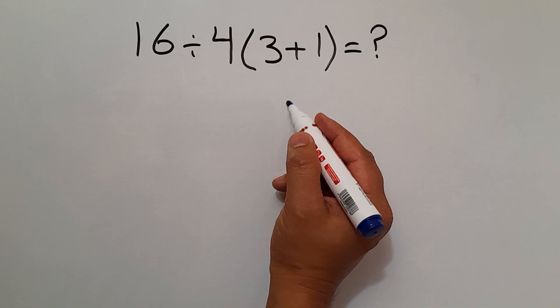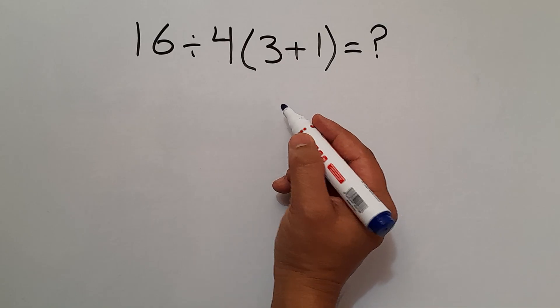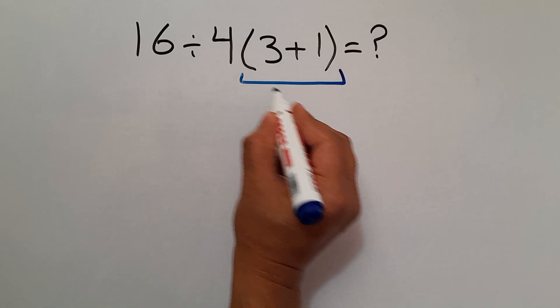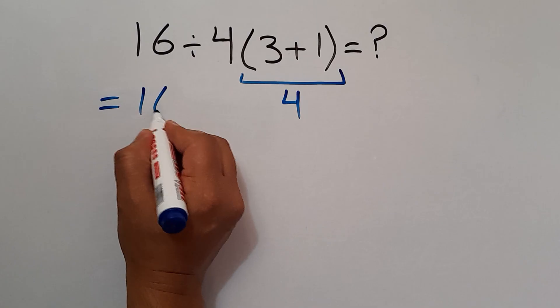3 plus 1 gives us 4, so we have 16 divided by 4 then times 4.